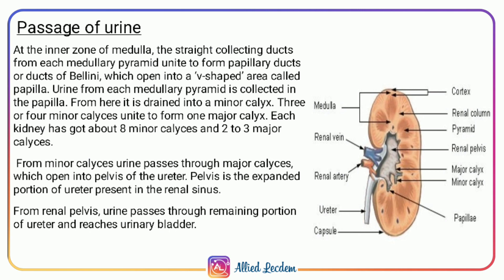The papillae collect urine from each medullary pyramid, from where it is drained into the minor calyx. Three or four minor calyces unite to form one major calyx. Each kidney has eight minor calyces and two to three major calyces. From the minor calyx, urine passes to the major calyx, then opens into the pelvis of the ureter. The pelvis is the expanded portion of the ureter present in the renal sinus.